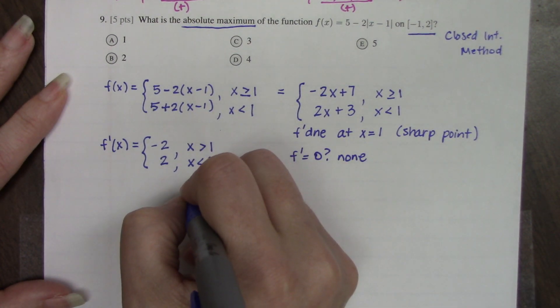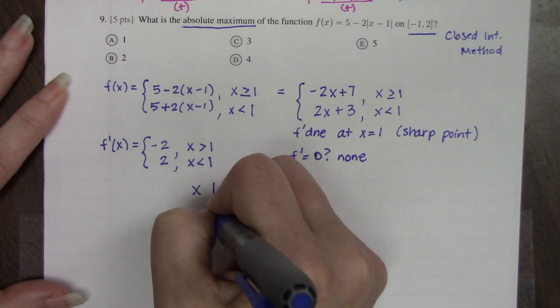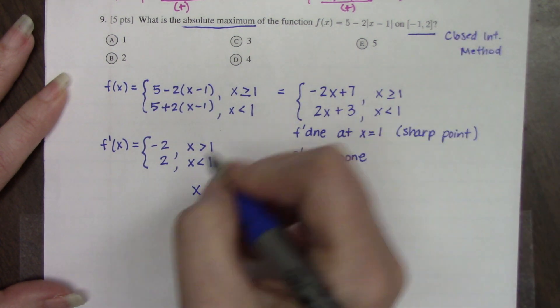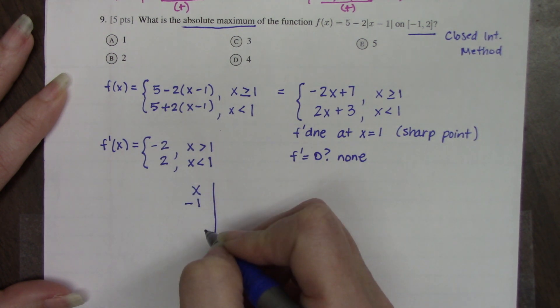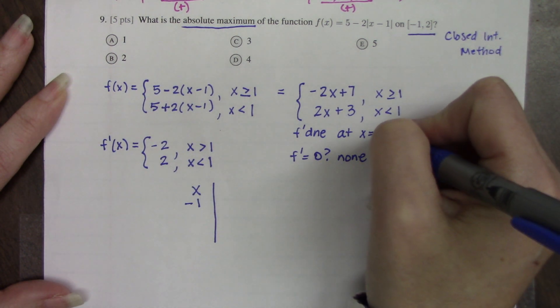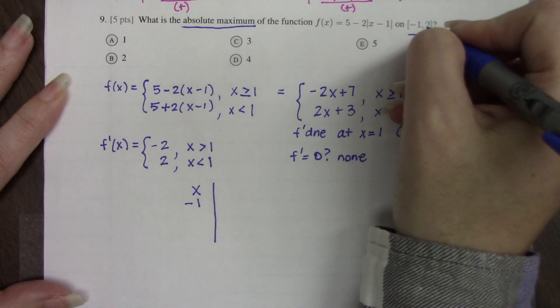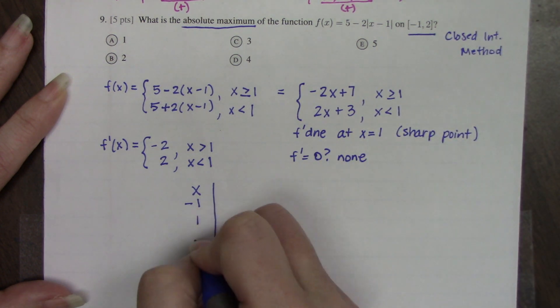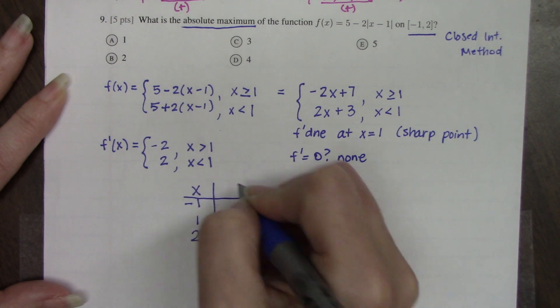Now to do the closed interval method, we set up a chart or a table. You grab the endpoints of your interval. So we start at -1. We look at any critical values that are inside our interval. 1 is definitely between -1 and 2, so we put 1 on here. And then we stop with the second endpoint.